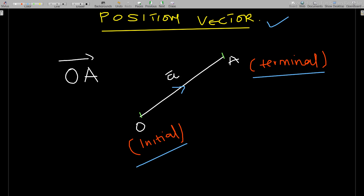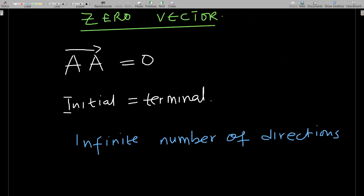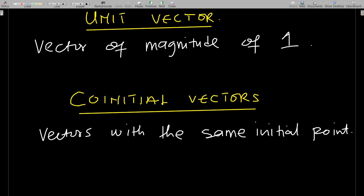The zero vector has a magnitude of zero. It is a vector whose initial and terminal points are the same. It has an infinite number of directions — that is one thing you should note about a zero vector.